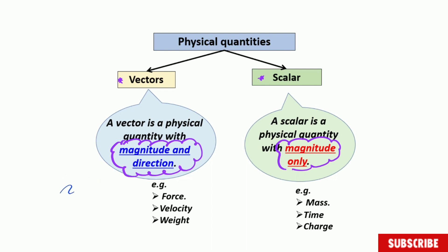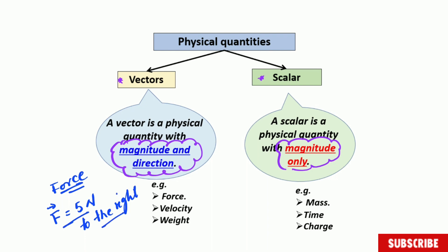For instance, when we're speaking about force — it's a simple example. When you speak about a force being applied on an object, it doesn't get well expressed if you say the force is five Newtons only. You need to give a direction. For example: a force of five Newtons is being applied on a box to the right. Now this quantity is well expressed. The same applies to other examples like weight and velocity.